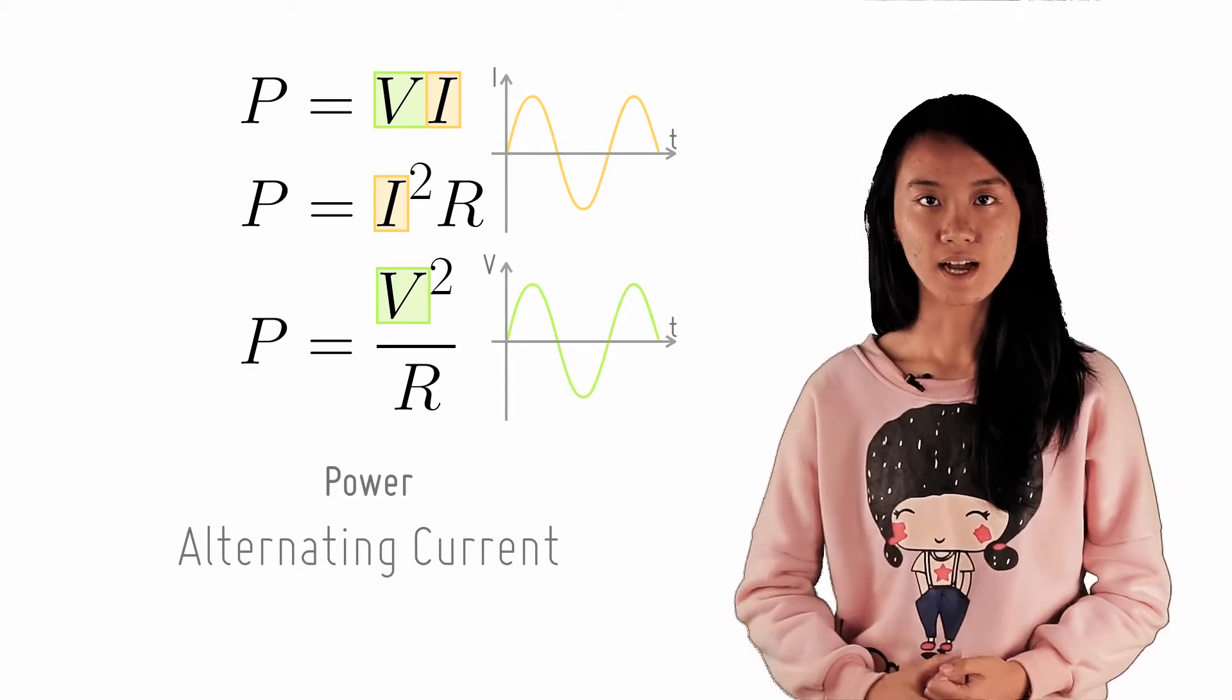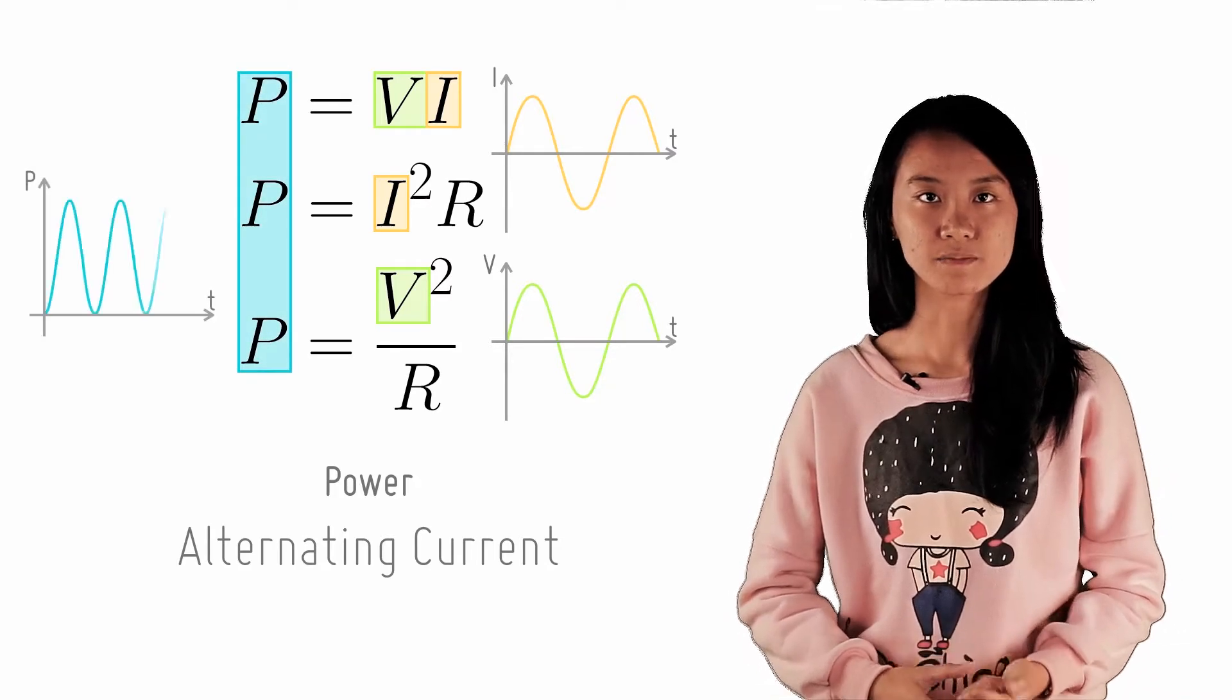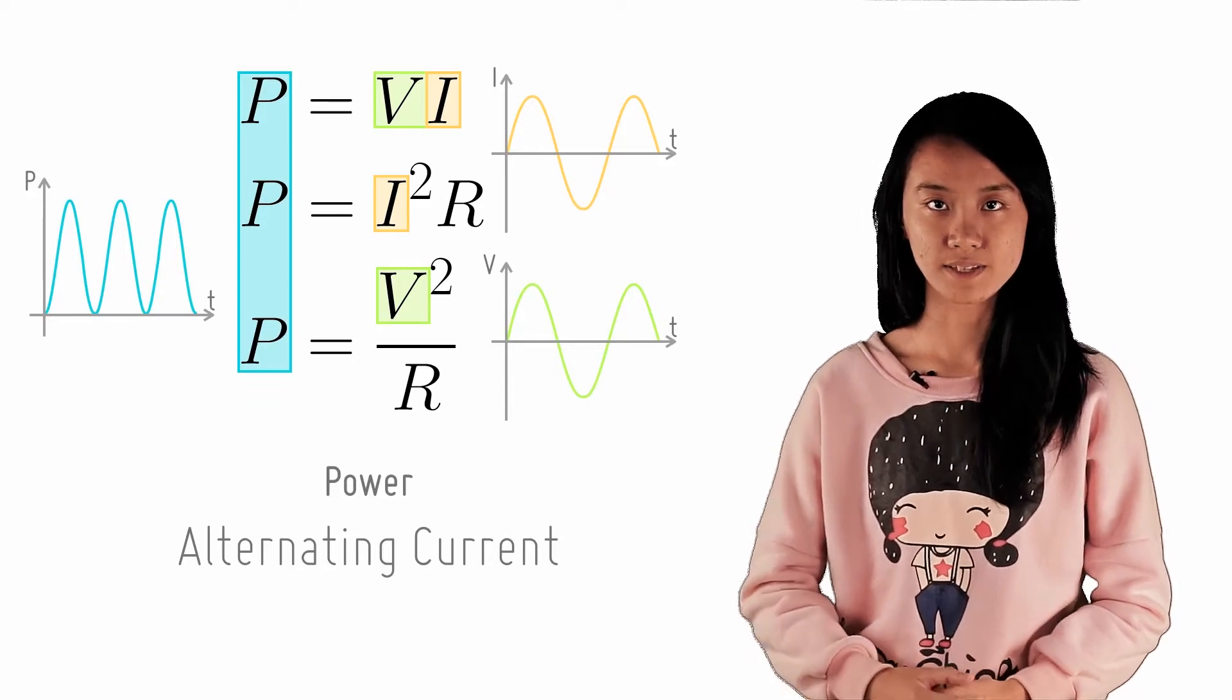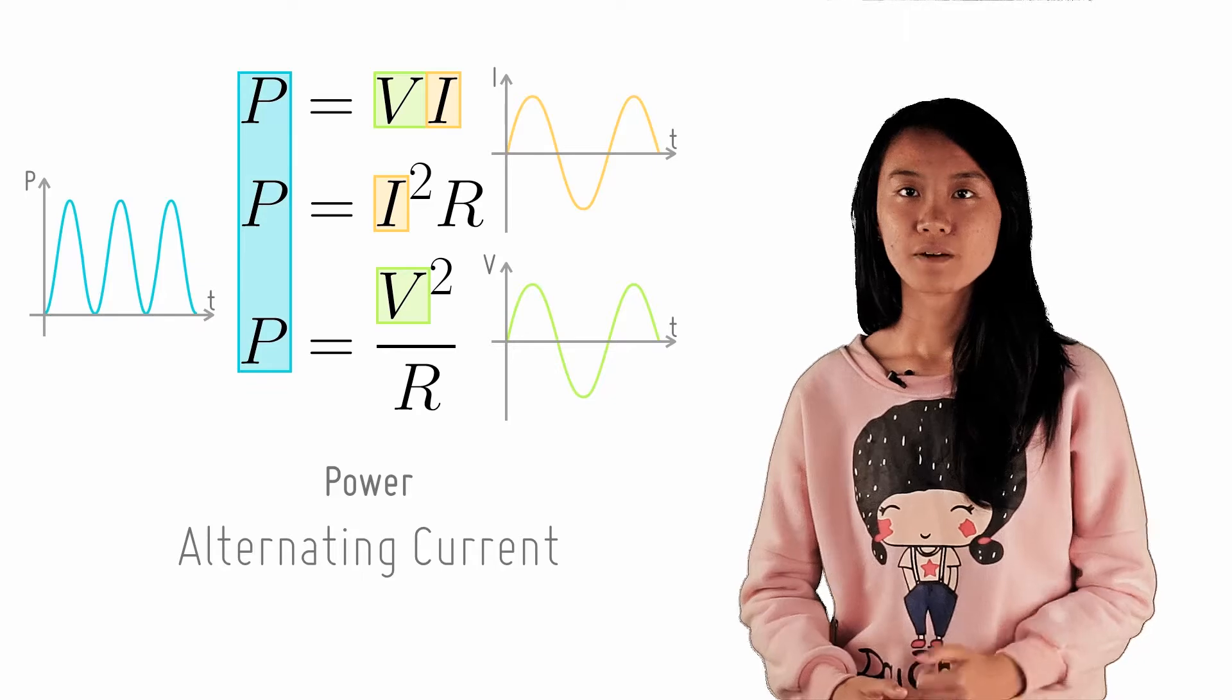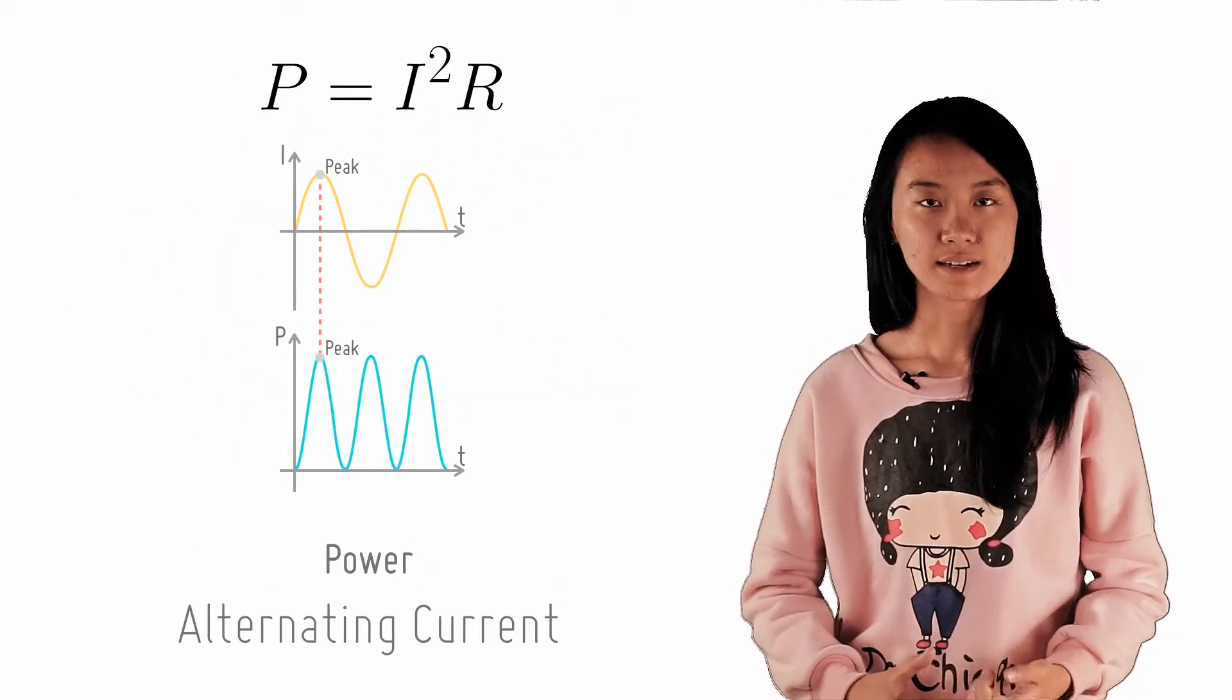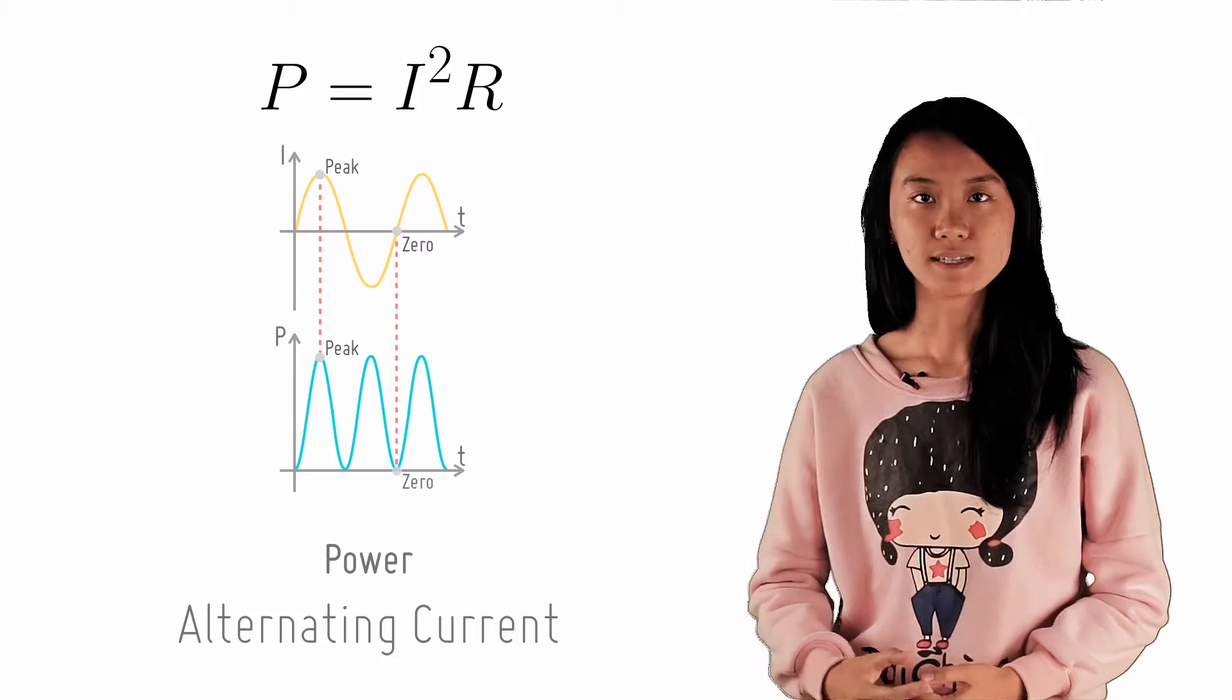Using P equals I squared R, where R is the resistance of the component, we know that the instantaneous power is at any point in time given the current. When the current peaks, the power output peaks as well. And when the current is near zero, the power is also zero.